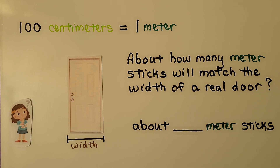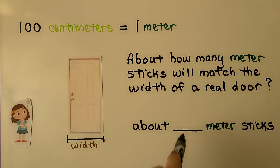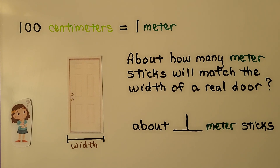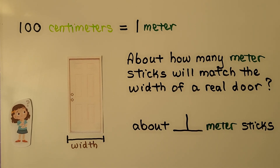About how many meter sticks will match the width of a real door? Can you imagine how many meter sticks would match the width? If you said about 1, you're right. It might not even be a full meter stick — the meter stick might be a little wider than the door. But this is just an estimate, so it's not exact.